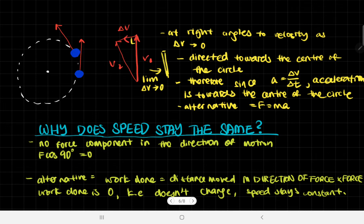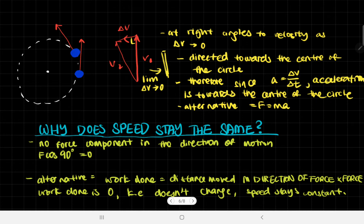That's only when we have right angles, because over here we can clearly see this is smaller than a right angle. But when it becomes very small, it will become very close to 90 degrees. And when it's 90 degrees, we can prove it's directed towards the center of that circle. Therefore, as delta V becomes very close to zero, acceleration - which is delta V divided by delta T - is also towards the center of the circle. An alternative way to prove this is F = ma: the same force causes the change in velocity as well as the acceleration, so they're both in the same direction - at right angles and towards the center.